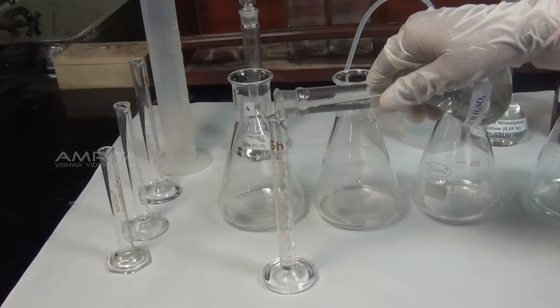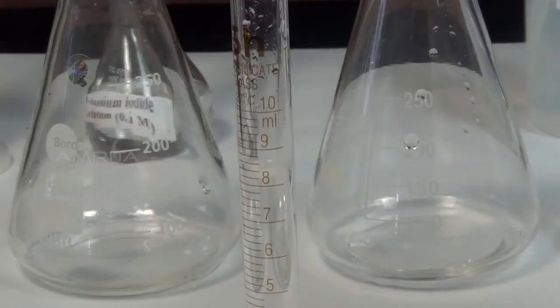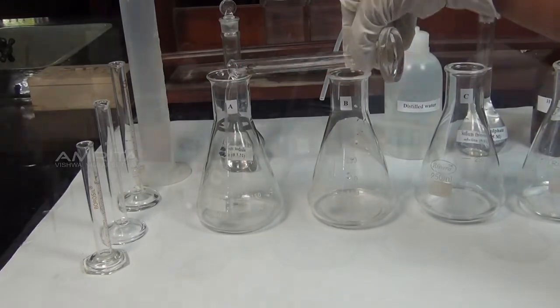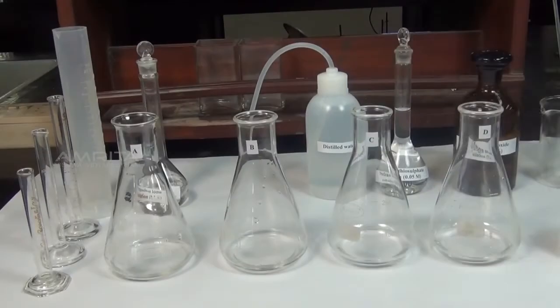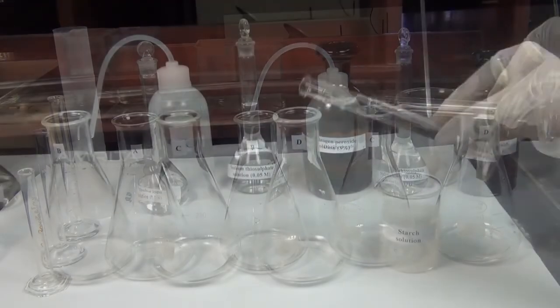Using another measuring cylinder, add 10 ml of 2.5 molar sulphuric acid to flasks A, B, C, and D.